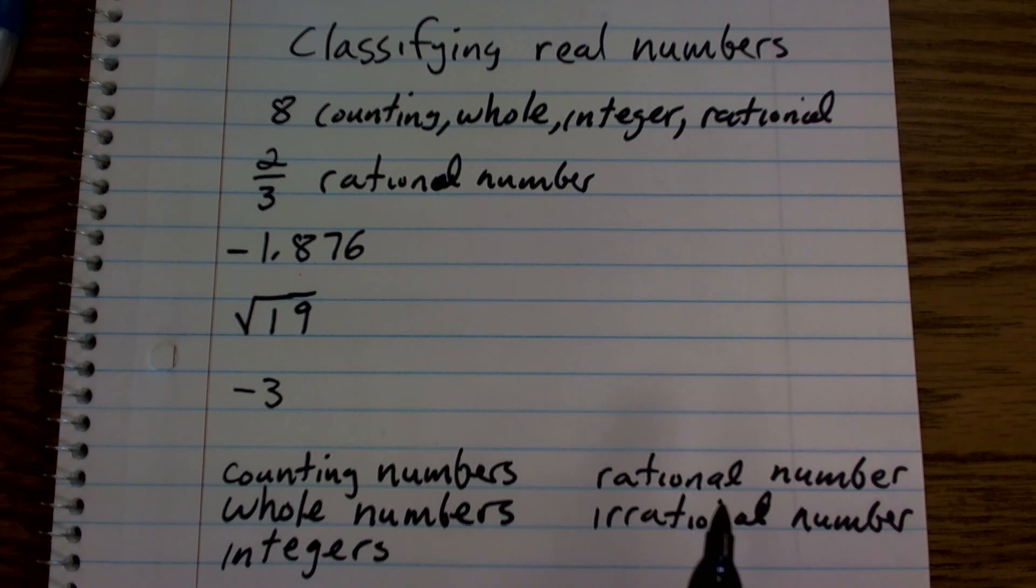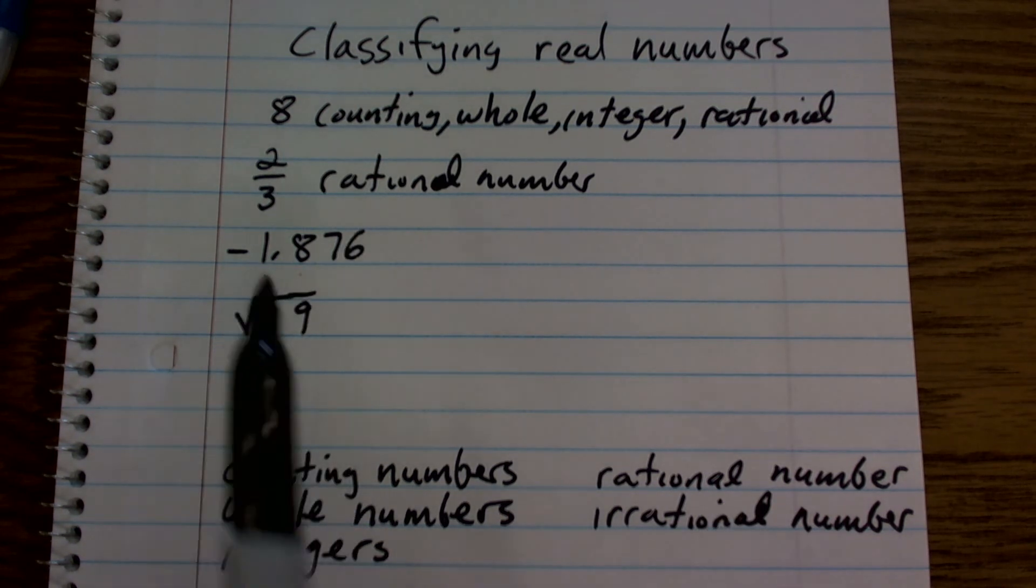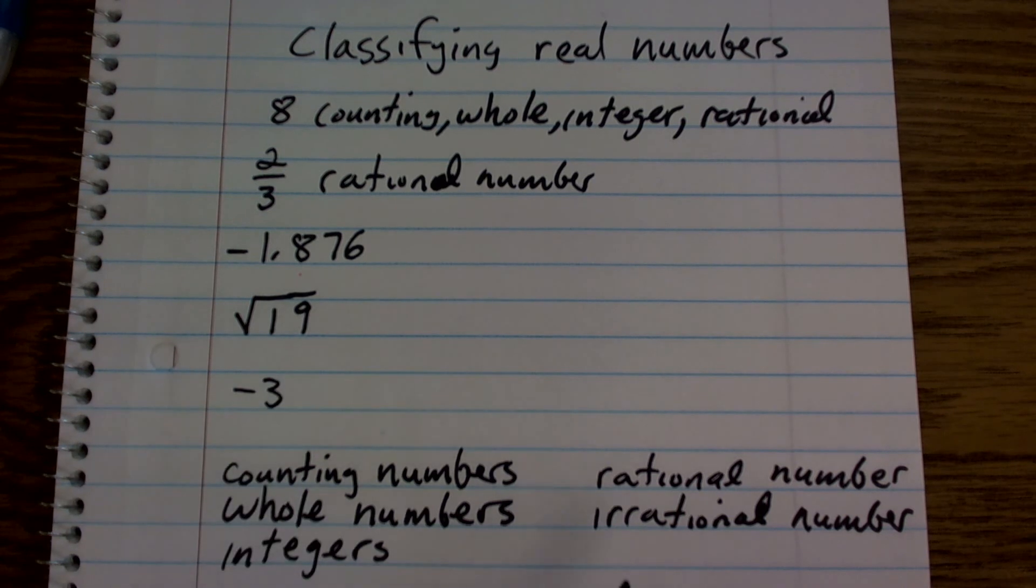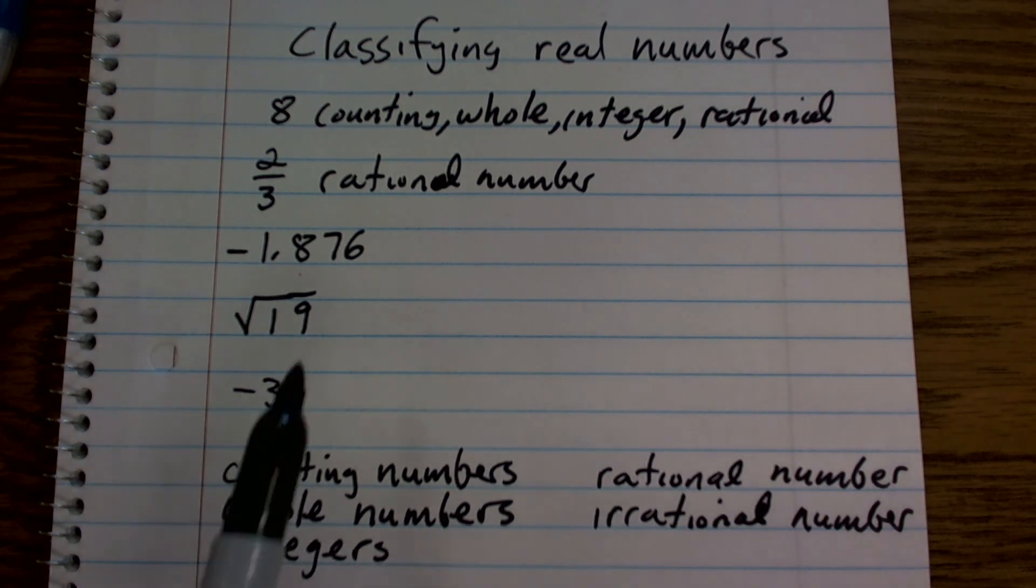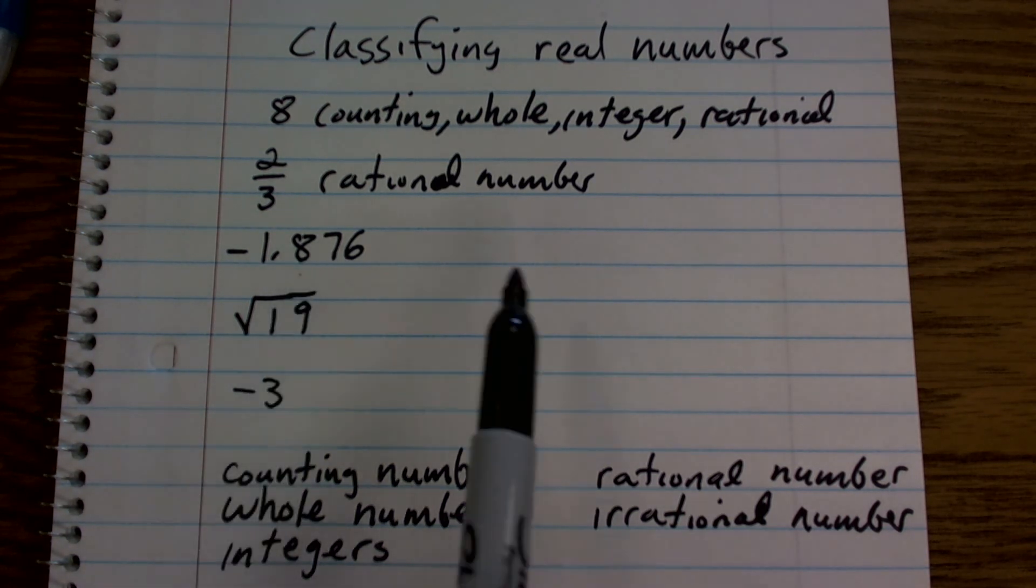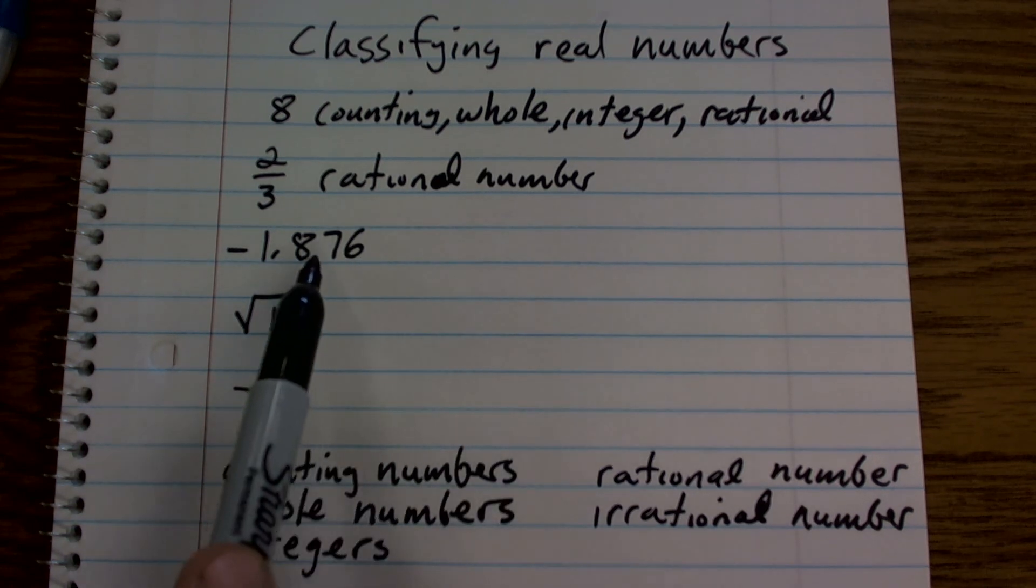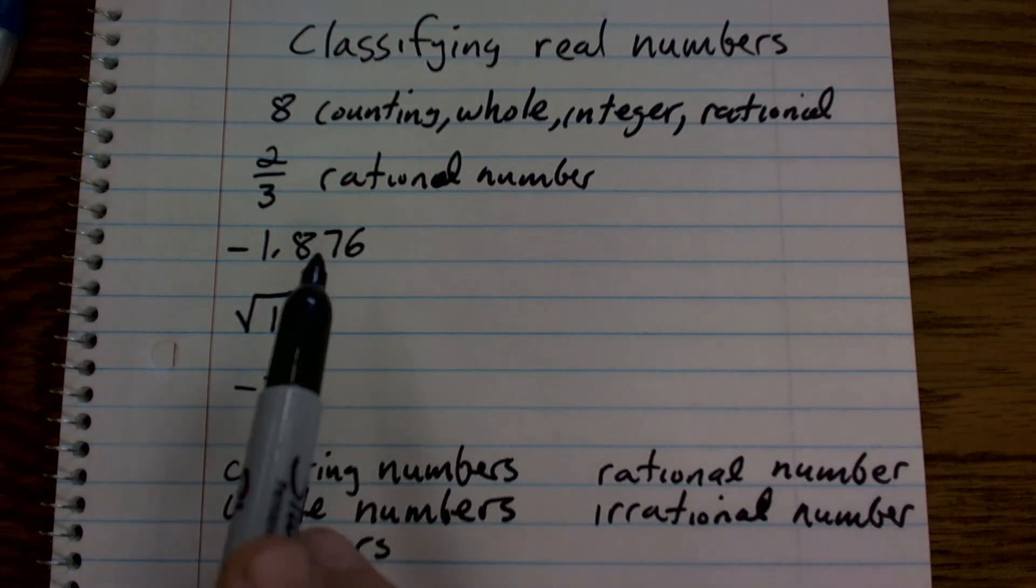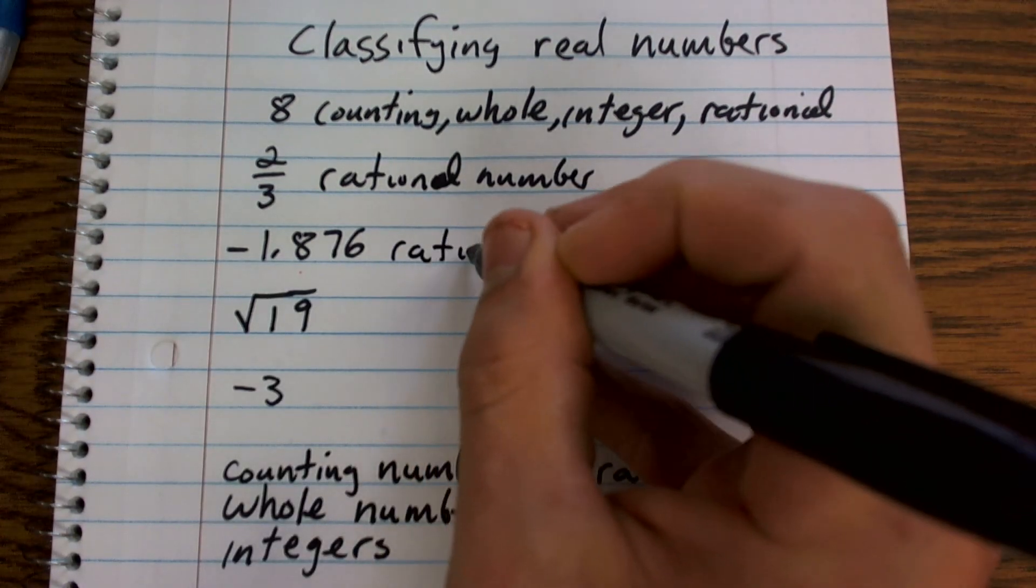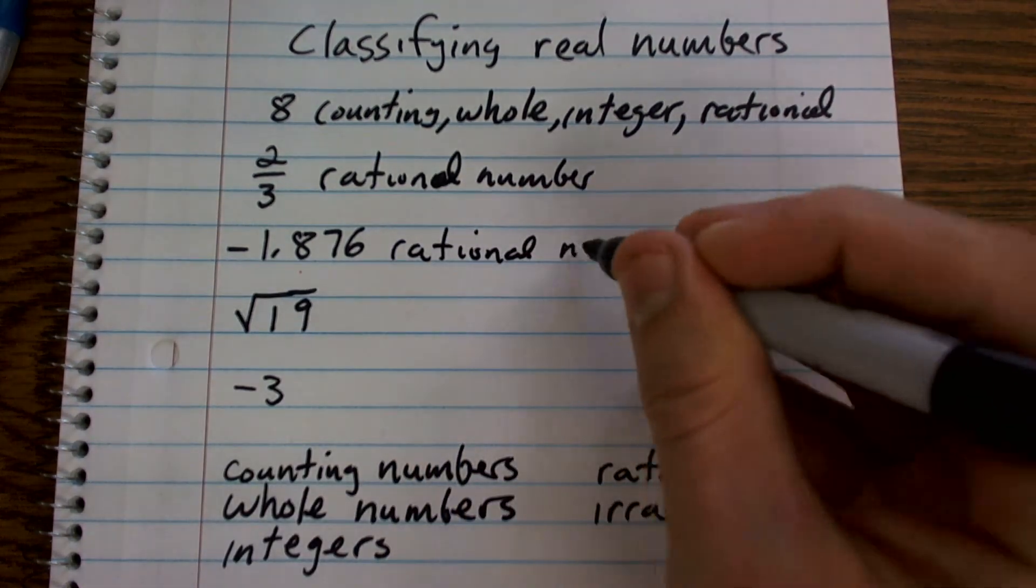Negative 1.876. Now, again, we talked about irrational numbers being decimals that went on and on forever. Well, since this stops, what we call it's terminal, we can write this as a fraction. I don't know what the fraction is, but there is a fraction that we can write to represent that. So it is going to be another rational number.